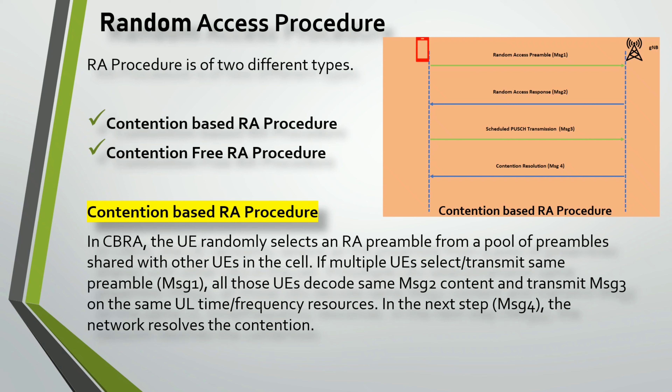The question arises: when exactly does contention resolution happen? This happens at Message 4, and contention resolution is based on the Timing Advance (TA) — the timing adjustment sent by the gNodeB to the UE.